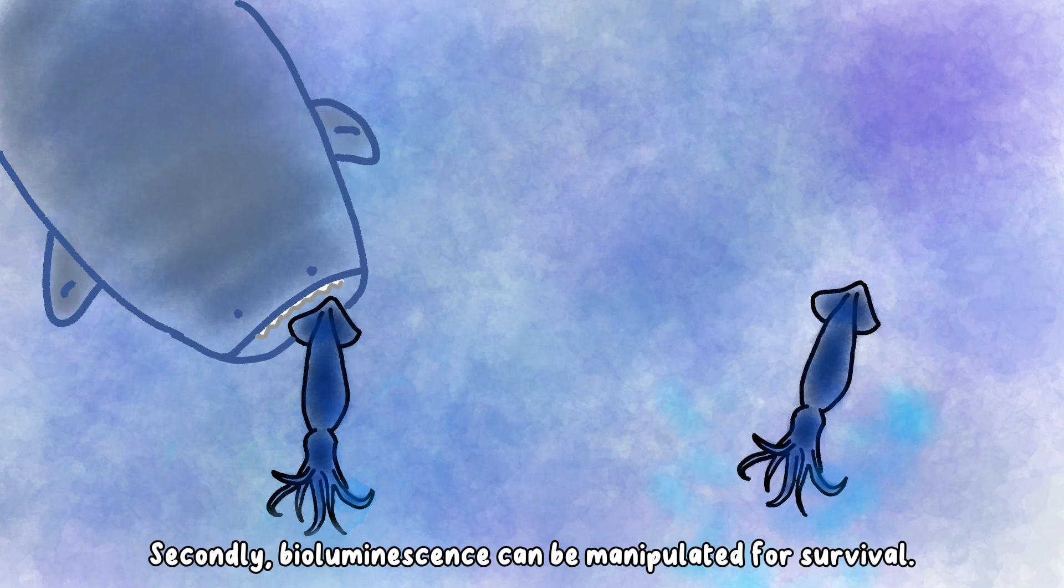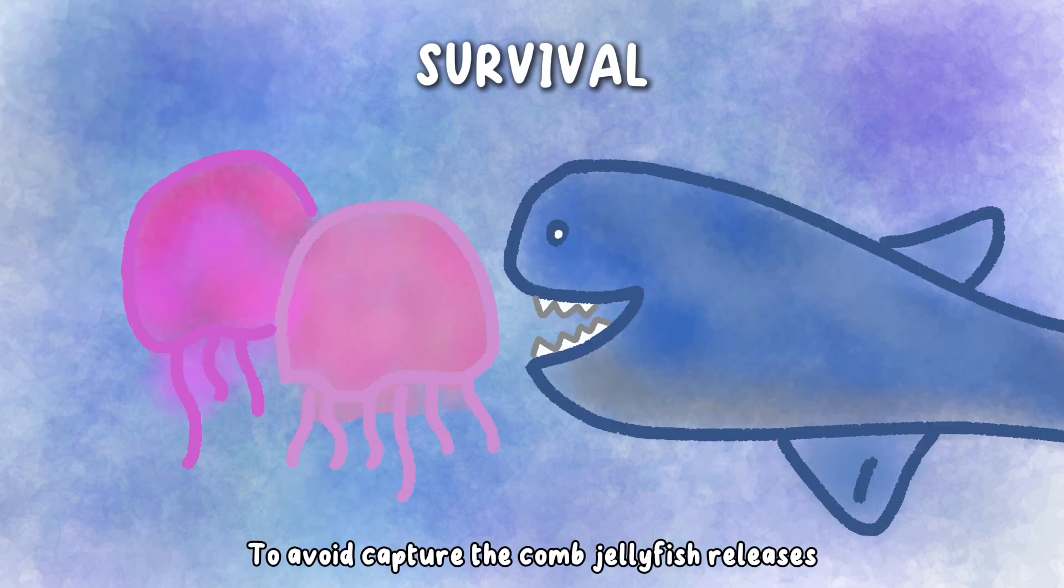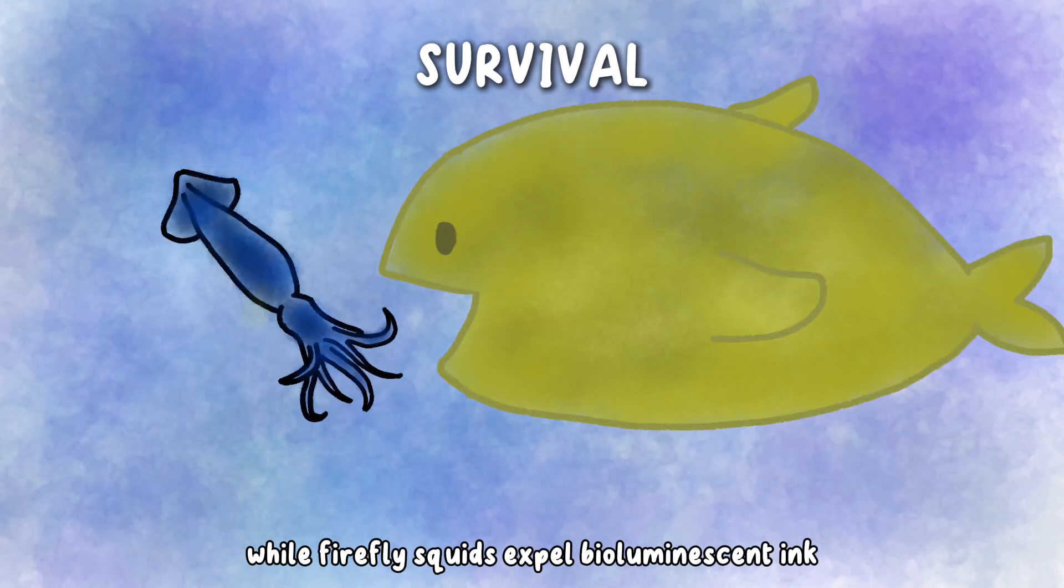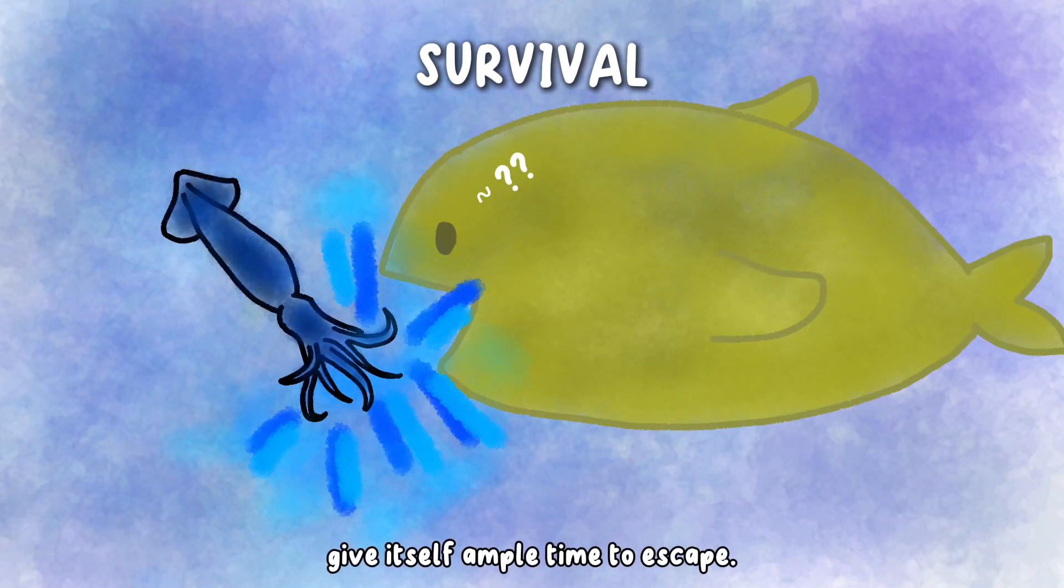Secondly, bioluminescence can be manipulated for survival. To avoid capture, the comb jellyfish releases flashes of light to startle predators, while firefly squids expel bioluminescent ink on their attackers to give themselves ample time to escape.